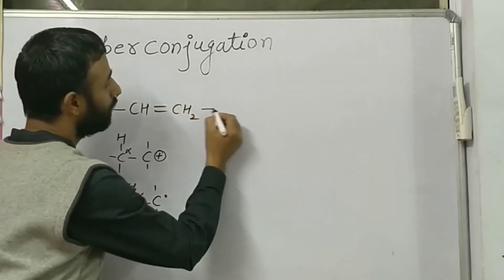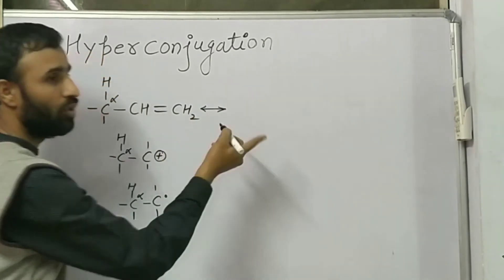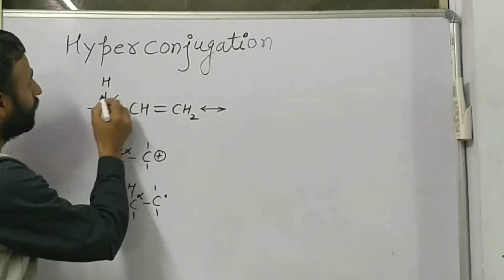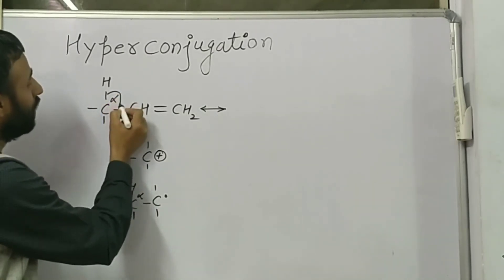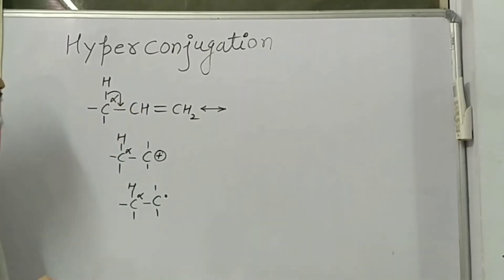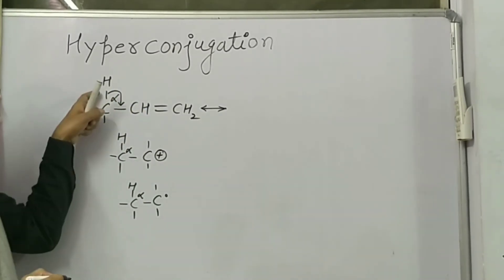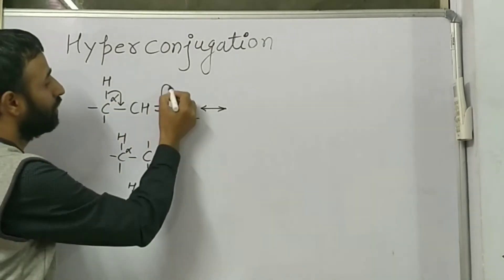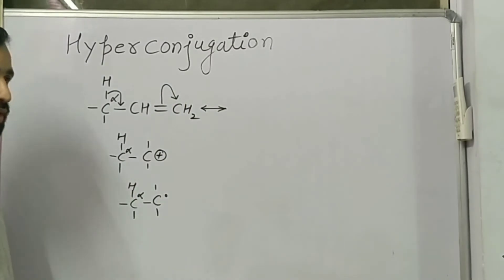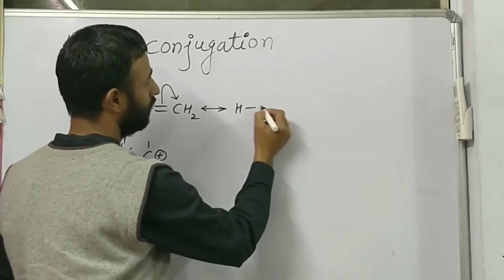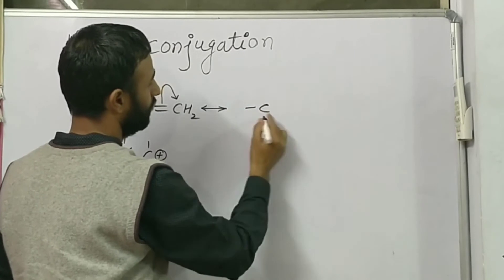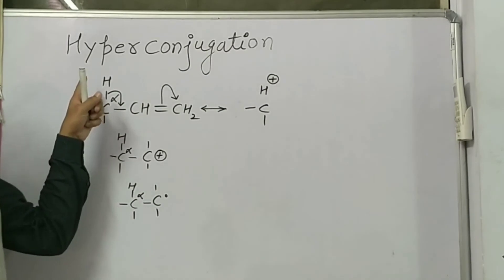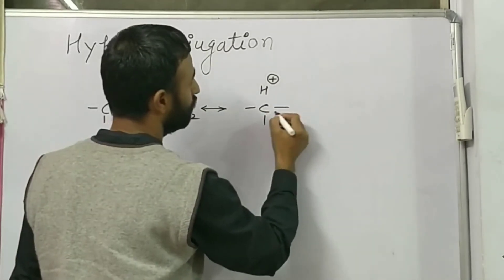Hyperconjugation is an electron-releasing effect. In this, the sigma electrons of the C-H bond are converted into a pi bond, and this pi bond is further shifted. In this way, the hydrogen gets a positive charge and a new double bond is formed.